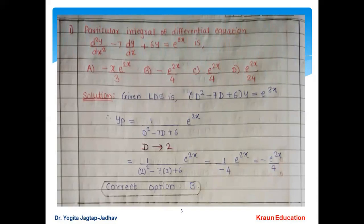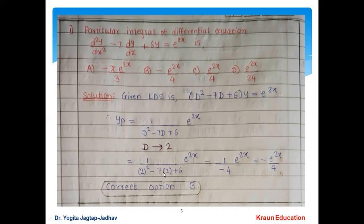Example 1: Find the particular integral of d²y/dx² - 7dy/dx + 6y = e^(2x). Writing in operator form, yp = 1/(D² - 7D + 6) · e^(2x). Replacing D by 2: denominator = 4 - 14 + 6 = -4. Therefore yp = e^(2x)/(-4), and the correct option is b.